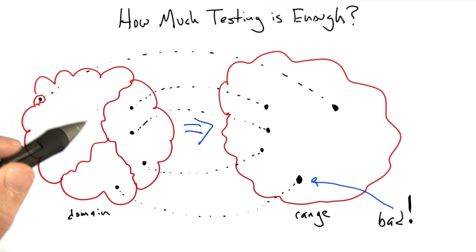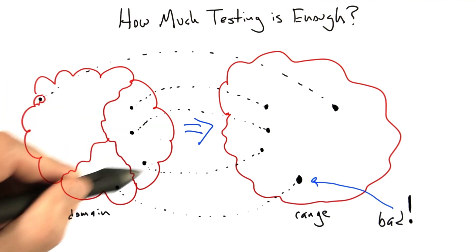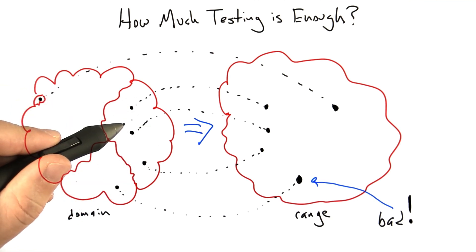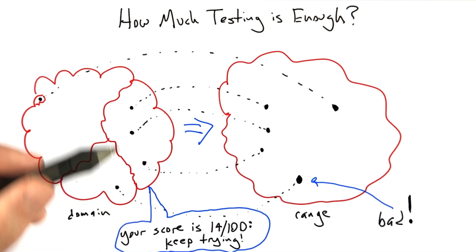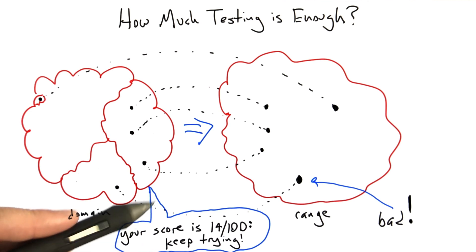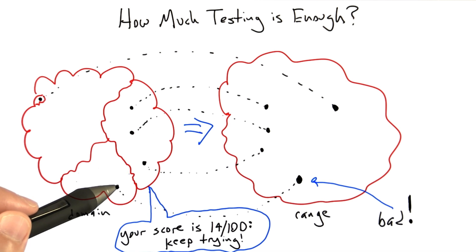So what we'd really like is some sort of a tool or some sort of a methodology that if we are, in fact, testing only a small part of the input domain for a system, what we'd really like is some sort of an automated scoring system that looks at our testing effort and says to us something like, your score is 14 out of 100. You're not doing a very good job testing the system, keep trying. And that's what today's lecture is going to be about.